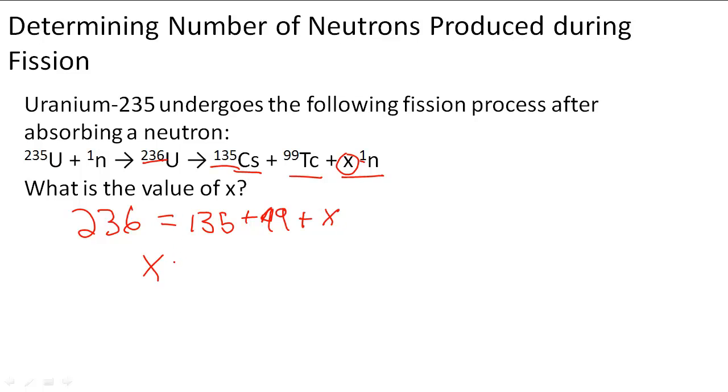So when I solve for x, I get that x is equal to 2. And if I put 2 in this reaction and I multiply by 2, if I add 2 plus 99 plus 135, I get 236. So I know that's the correct number of neutrons.